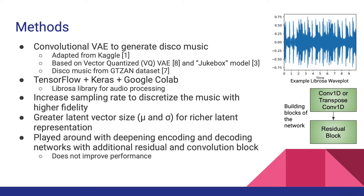One thing that was very helpful was increasing the sampling rate to discretize the music with higher fidelity. Increasing the sample rate from what was originally 3,000 Hz to 20,000 Hz allowed for much smoother and better quality with less noise. Additionally, we increased the latent vector size, mu and sigma, for richer latent representation, which allows for greater diversity in the generated samples. We played around with deepening the encoding and decoding networks with additional residual and convolutional blocks; however, we noticed that this did not improve performance — in fact, it actually hurt it.